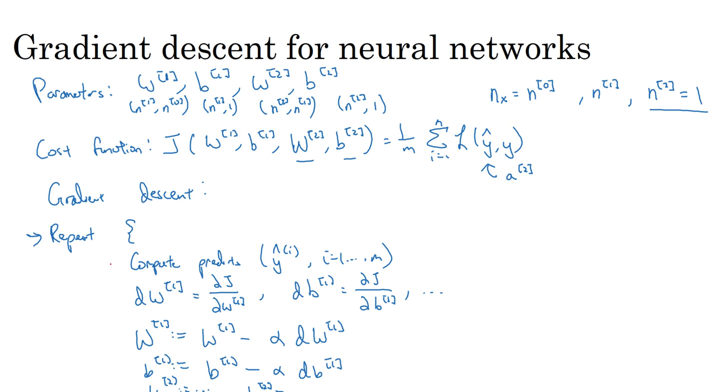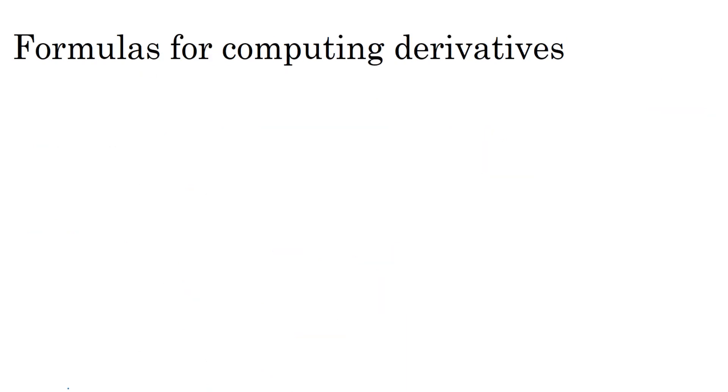So in previous videos, we talked about how to compute predictions, how to compute the outputs, and we saw how to do that in a vectorized way as well. So the key is to know how to compute these partial derivative terms, the dw1, db1, as well as the derivatives, dw2 and db2. So what I'd like to do is just give you the equations you need in order to compute these derivatives. And I'll defer to the next video, which is an optional video, to go greater into depth about how we came up with those formulas.